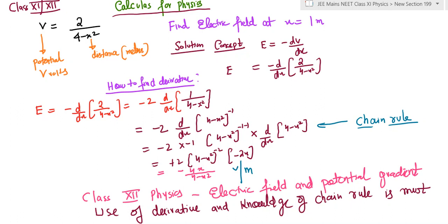We have to find the electric field at x = 1 meter. We know that electric field is given by derivative of potential with respect to x with a negative sign.